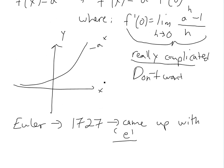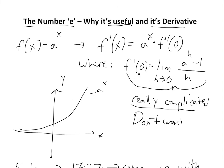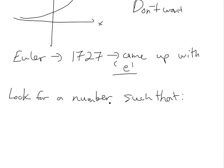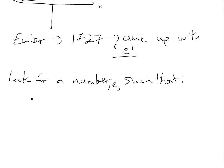So this number e, basically what he argued was, we don't want this, let's look for a number such that f prime of zero equals one. So this basically greatly simplifies it, greatly simplifies the above.